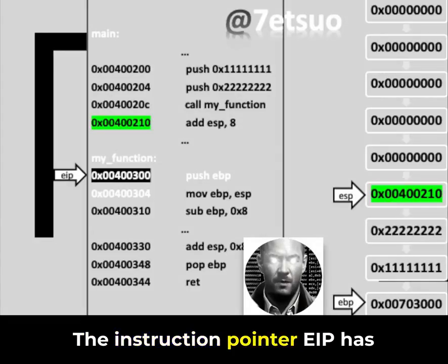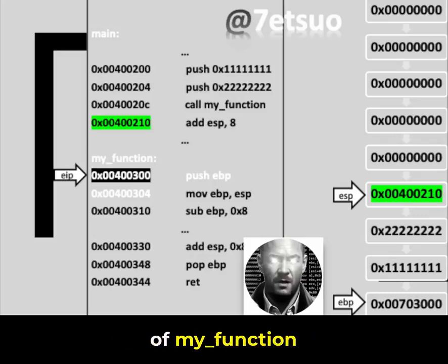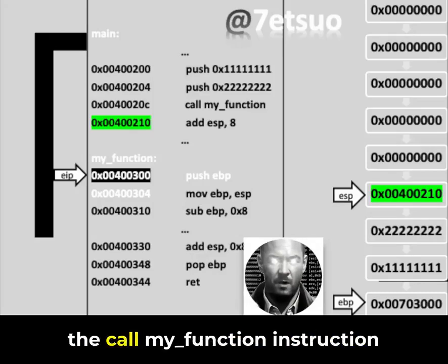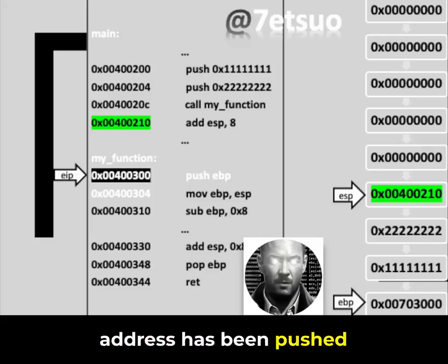The instruction pointer, EIP, has now moved to the push EBP instruction at the start of my_function, signifying the beginning of a new stack frame. This shows the stack after the call my_function instruction has executed, where the return address has been pushed onto the stack.